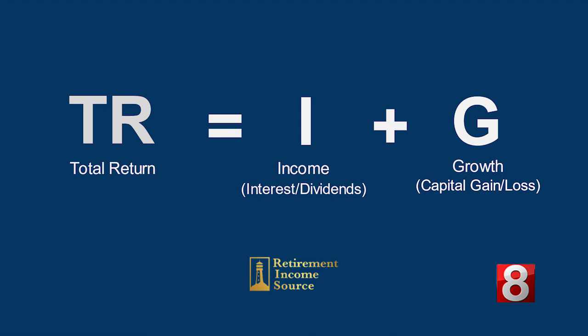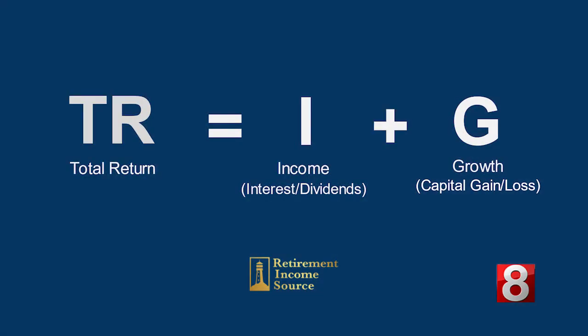Think of it this way: if you have a rental property, you have two ways to make money. One is the rental income that you get — that's the I, the income — and the other is that the property over time should appreciate in value — that's the growth, the G. What's so important about this is that through most of your working years, when you're accumulating, all you want is total return. You don't care whether it comes from the income or the growth, the I or the G. But when you get within that critical period, within 10 years of retirement, all of a sudden where you get that return from does matter. And the I becomes the most important component — the income that gets paid out to a retiree so that person can live and replace that paycheck.